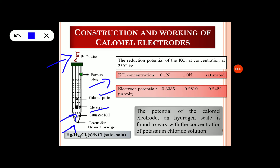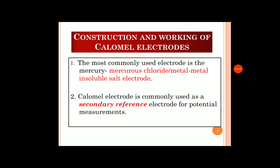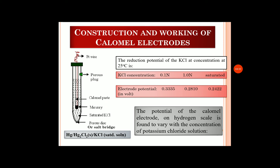The calomel electrode can be represented as: Hg | Hg₂Cl₂ | KCl (saturated solution). Based on the concentration of the KCl solution, the electrode potential of the calomel electrode varies. If the concentration is 0.1 normal, the electrode potential will be 0.3335 V. If the concentration is 1.0 normal, the potential will be 0.2810 V. If saturated KCl solution is used, the potential will be 0.2422 V.